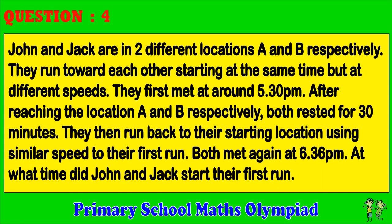Question 4. John and Jack are in two different locations A and B respectively. They run toward each other starting at the same time, but at different speeds. They first met at around 5:30 p.m. After reaching locations A and B respectively, both rested for 30 minutes. They then ran back to their starting locations using similar speeds to their first run. Both met again at 6:36 p.m. At what time did John and Jack start their first run?